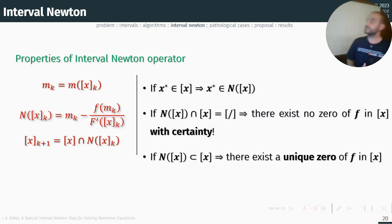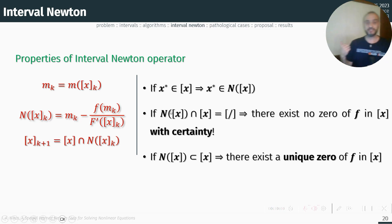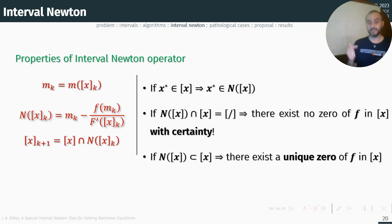The red formulas describe the interval Newton operator — this is where the classic and interval methods differ. On the right side we have some serious properties: if the zero belongs to an interval, this zero will belong to the interval derived by the Newton operator. The second property tells us that if the intersection of the Newton operator and the interval is empty, then there exists no zero of f in X with certainty. And if the interval derived by the interval Newton method is strictly contained in X, then there exists a unique zero of f.